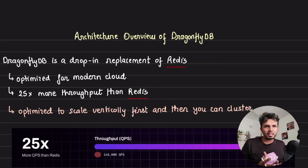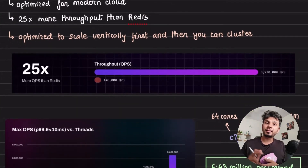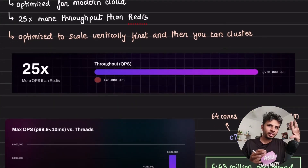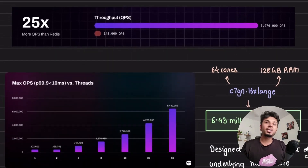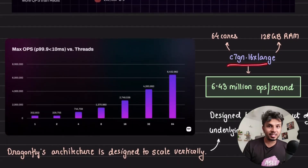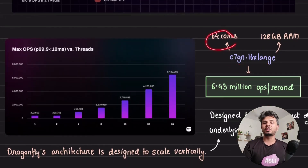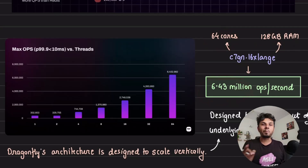DragonFly DB is a drop-in replacement of Redis and it offers 25 times the throughput. This is the first video in the DragonFly DB internal series and in this one we go through its architecture, design decisions, trade-offs, and implementation specifics. But before that, some numbers to set the context: when you run DragonFly DB on a C7G9 16x large instance — 64 cores and 128 GB RAM — you get a staggering 6.43 million operations per second.